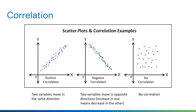For correlation, we use scatter plots to visualize potentially correlated data. Both variables must be continuous. We plot them against one another on the x and y axes and look for correlation. There are three kinds of correlations: a positive correlation, where the two variables move in the same direction; a negative correlation, where an increase in one variable means a decrease in the other; and no correlation, where there is no obvious relationship between the two variables.